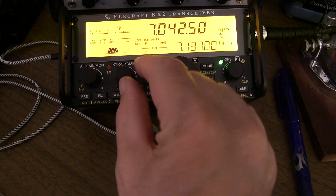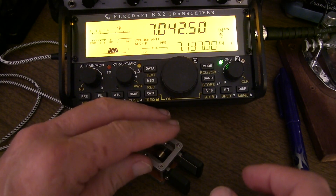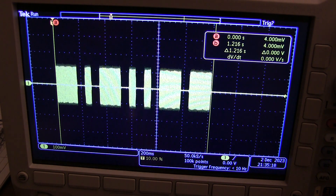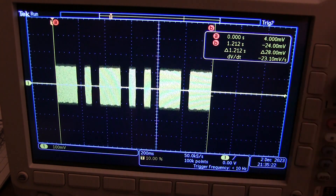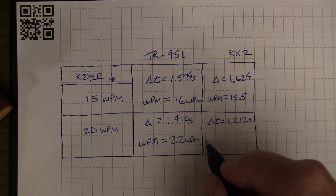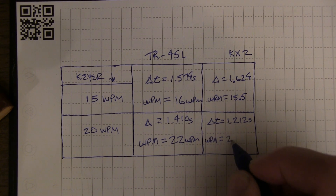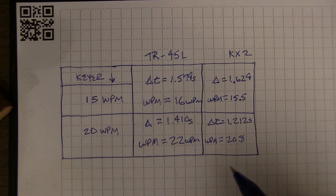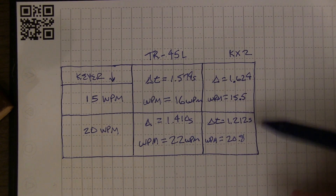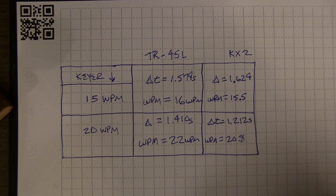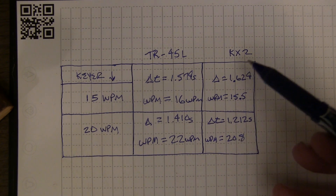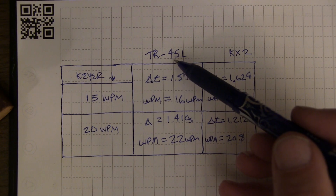Let's check the KX2 at 20 words per minute. Setting the keyer speed to 20 and sending that same set of characters, the scope measurement comes out to 1.212 seconds. A delta-T of 1.212 seconds gives us 20.8 words per minute — just about 21. The KX2 is much closer to the actual setting, only about 5% fast compared to the TR-45. So if I want to target 20 WPM on the KX2, I'd set it to 19; on the TR-45, I'd set it to 18.